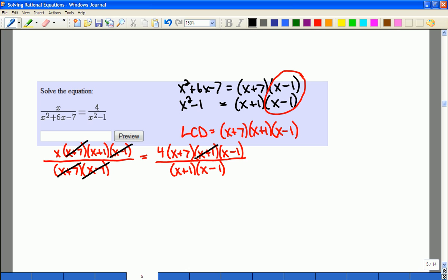So again, I can see that these factors can be removed, and the equation that comes out of this is x times x plus 1 equals 4 times x plus 7.